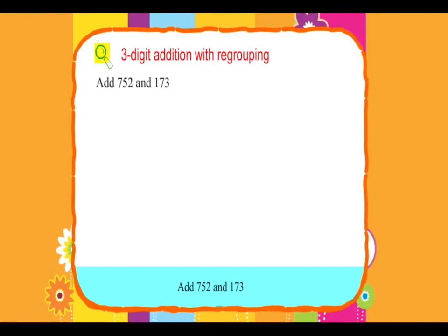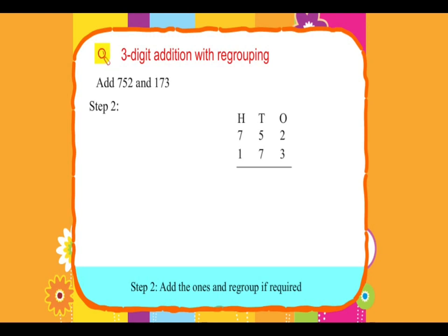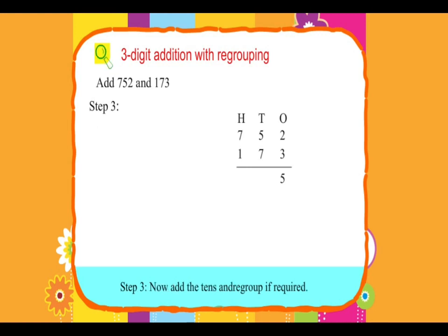3-digit addition with regrouping. Add 752 and 173. Arrange the numbers in columns of hundreds, tens, and ones. Step 1: Add the ones and regroup if required. 2 ones plus 3 ones equals 5 ones. Step 2: Now add the tens and regroup if required. 5 tens plus 7 tens equals 12 tens.